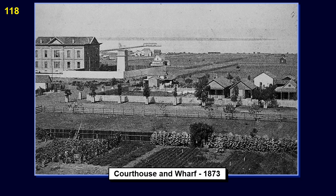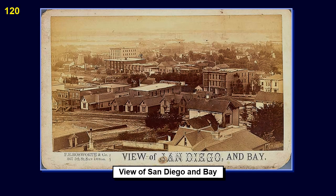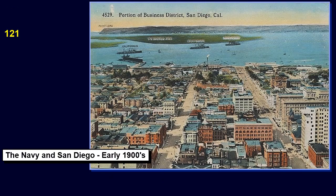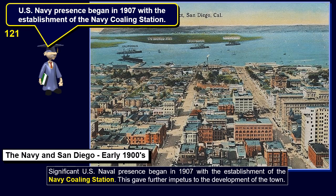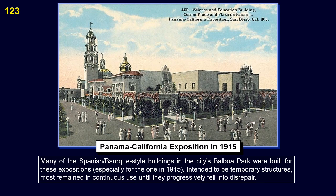This is the courthouse and wharf in 1873. This is the San Diego harbor and Point Loma in 1888. This is a view of San Diego and the bay. Significant U.S. naval presence began in 1907 with the establishment of the Navy coaling station, which gave further impetus to the development of the town. San Diego hosted two world's fairs: the Panama-California Exposition in 1915 and the California-Pacific International Exposition in 1935. Many of the Spanish/Baroque-style buildings in the city's Balboa Park were built for these expositions, especially for the one in 1915. Intended to be temporary structures, most remained in continuous use until they progressively fell into disrepair.